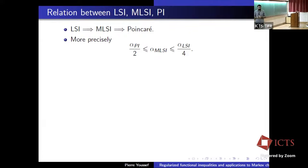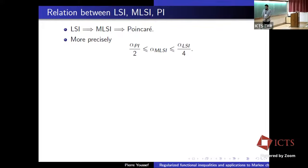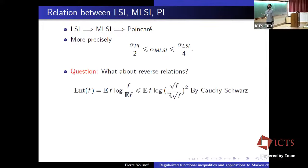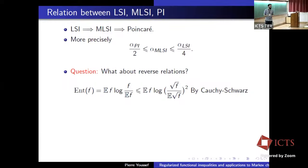We have a precise comparison of the constants: the Poincaré constant over 2 is smaller than the modified log-Sobolev constant, which is smaller than the log-Sobolev constant over 4. So we have a complete understanding of the hierarchy of those inequalities. What we would like to understand in this talk is actually the reverse: can we go from Poincaré to log-Sobolev, or from MLSI to log-Sobolev inequality? The answer is of course no, because those inequalities are strictly stronger one to another. But there is a cost, and what is the cost of reversing these inequalities — that's what we're going to do.